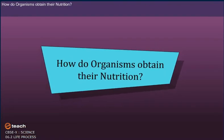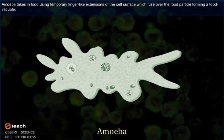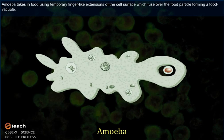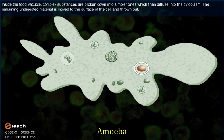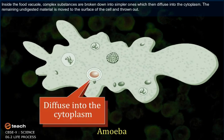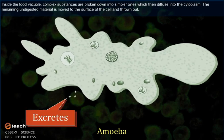Amoeba takes in food using temporary finger-like extensions of the cell's surface which fuse over the food particle forming a food vacuole. Inside the food vacuole, complex substances are broken down into simpler ones which then diffuse into the cytoplasm. The remaining undigested material is moved to the surface of the cell and thrown out.